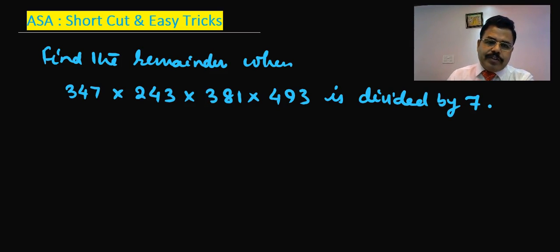To solve this question, we can find if any one of the numbers is divisible by 7. If yes, then the answer will be 0. The trick is that if any one of the numbers is divisible by 7, then the remainder will be 0.